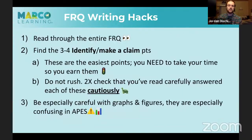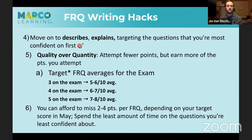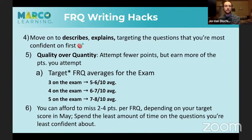Attempt fewer points, but earn more of the ones you attempt. Historically, if you can average a five or six out of 10, you've put yourself in good position for a three. A six to seven puts you in great position for a four. If you want a five, you want to be averaging around a seven to eight. Depending on your target score, you can afford to miss two to four points per FRQ. As a rule of thumb on describes and explains, think two sentences for describe and three key components for explain.